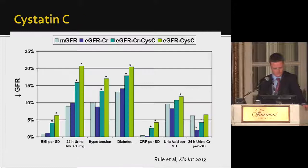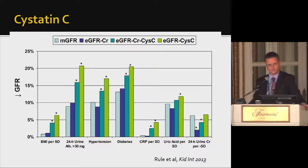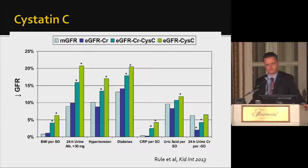KDIGO recommends using the blended creatinine-cystatin C equation for patients with equivocal GFR measurements as a better predictor of outcomes in moderate GFR declines. In 2013, Schlipbach published in the New England Journal of Medicine showing that adding cystatin C to the creatinine equation led to reclassification associated with reduced risk for all outcomes — a 21% reclassification improvement for mortality. However, there was no net reclassification improvement for CKD progression or end-stage renal disease.